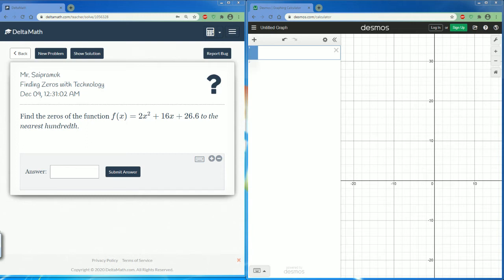Welcome to the Delta Math Tutorial. This is going to be covering finding zeros with technology. Here it says to find the zero of the function f(x) = 2x² + 16x + 26.2 to the nearest hundredth.